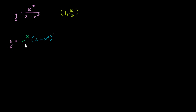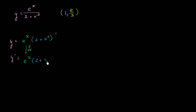So the derivative y prime is going to be equal to the derivative of the first part, e to the x — and what's amazing about e to the x is that its derivative is just e to the x — times the second part: 2 plus x to the third to the negative 1.